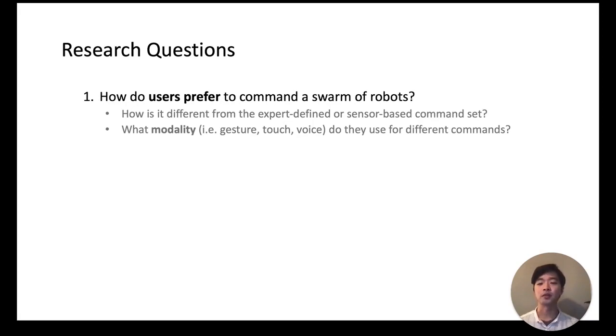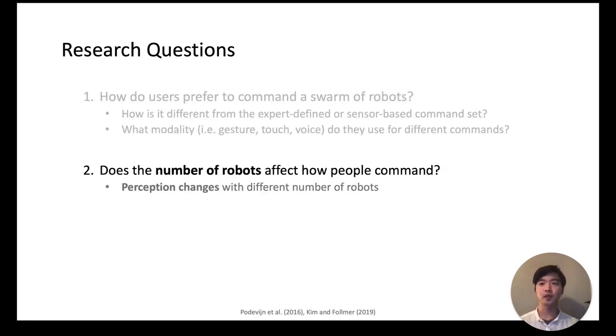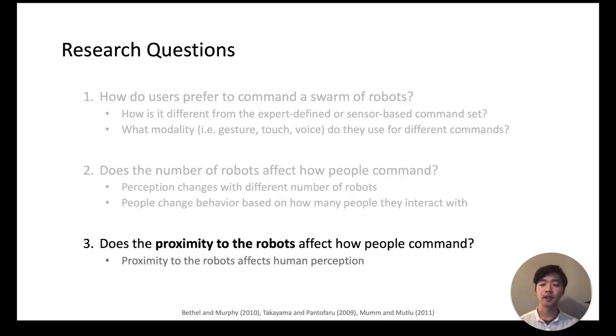First, how do users prefer to command a swarm of robots? Is it actually different from expert-defined or sensor-based command sets? And what types of modality do people use for different commands? Another question that emerges for multi-robot systems is, how does the number of robots affect this? Literature in HRI has shown that people's perception changes based on how many robots they interact with, so what is its effect on how people command? Lastly, what role does proximity have in how people command robots? Again, literature from HRI has shown that proximity to robots affects how humans perceive them.